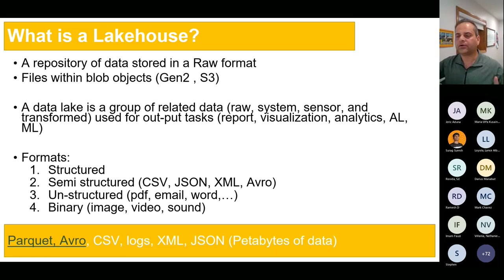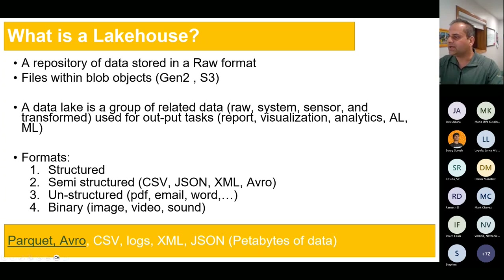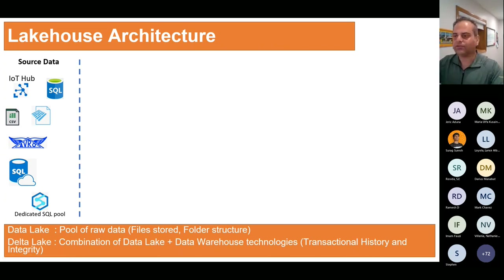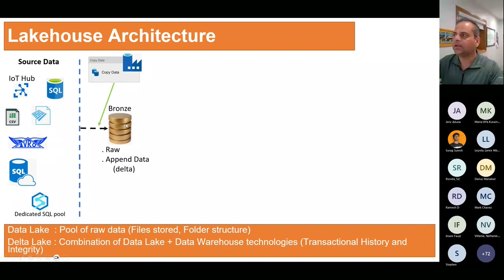In the lakehouse you can store all kinds of formats: structured, semi-structured, unstructured, binary, videos, images, sound. Devices are storing files directly, so you can leverage lakehouse architecture regardless of whether your data is structured or unstructured. On the left side you have source data that needs to move into bronze - the raw zone where data is appended. You move data using Azure Data Factory copy data activity.